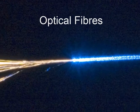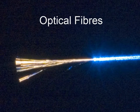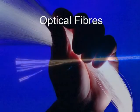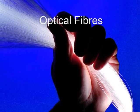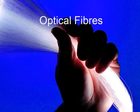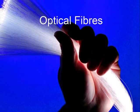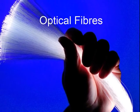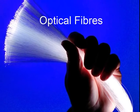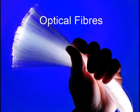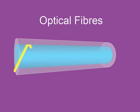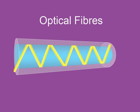The ends of the strands are polished and clamped firmly after aligning them carefully. When light is incident at a small angle at one end, it gets refracted into the fibers and is incident on the interface of the fibers and the coating. The angle of incidence being greater than the critical angle, the ray of light undergoes multiple total internal reflections subsequently.